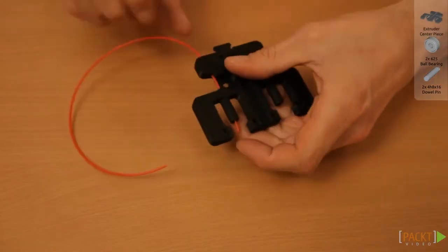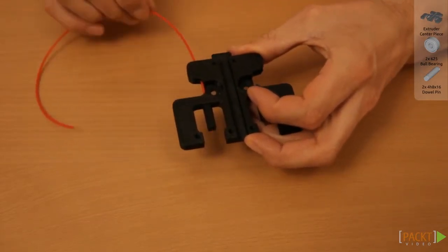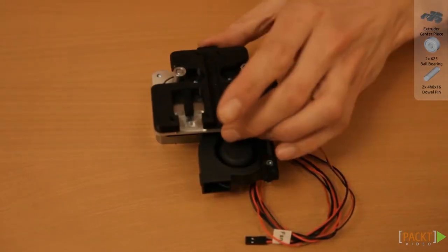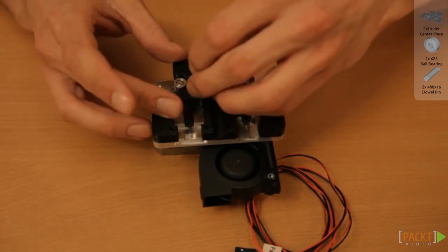Check if the filament can freely move through the printed extruder centre part and put it onto the aluminium plate. Place the bearings and fix them with the dowel pins.